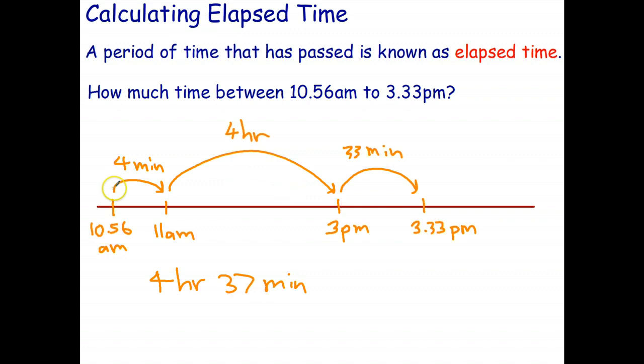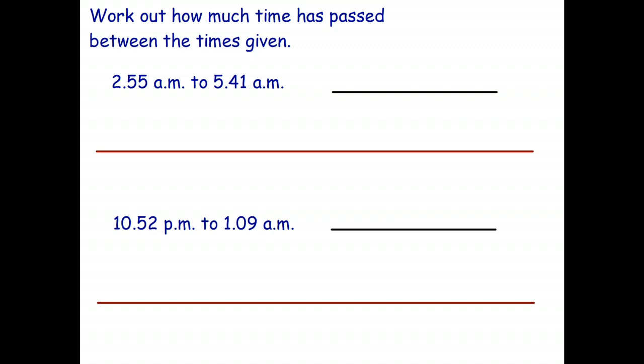Now, with practice, you probably won't have to draw the diagram, but you could use the same reasoning. 4 minutes to get to 11 a.m., 4 hours to get to 3 p.m., and then 33 minutes more. Okay, why don't you try these two? I've given you the timelines if you want to use those. Stop the video, work out these durations, and then check your answers when you come back.